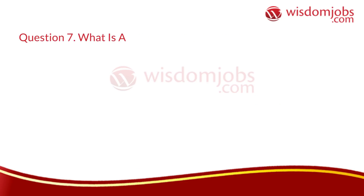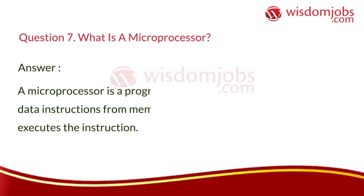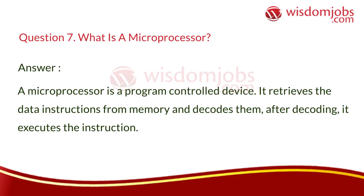Question 7: What is a microprocessor? Answer: A microprocessor is a program-controlled device. It retrieves the data instructions from memory and decodes them. After decoding, it executes the instruction.